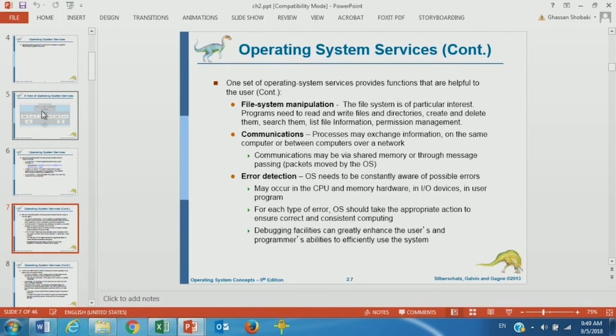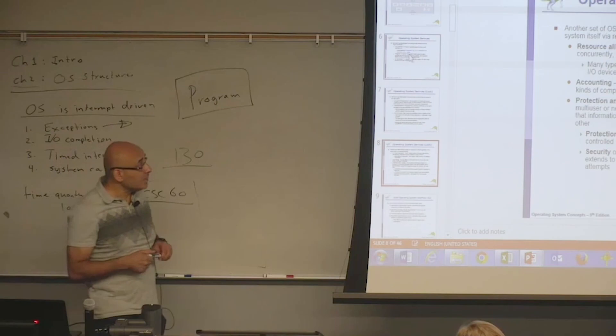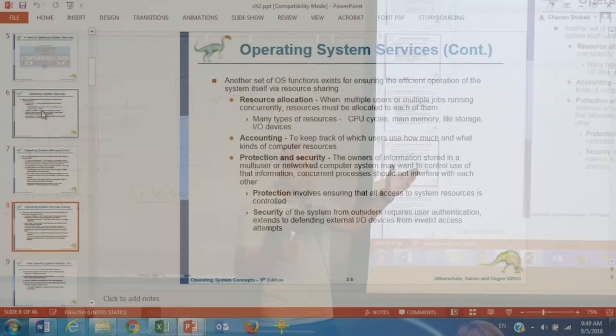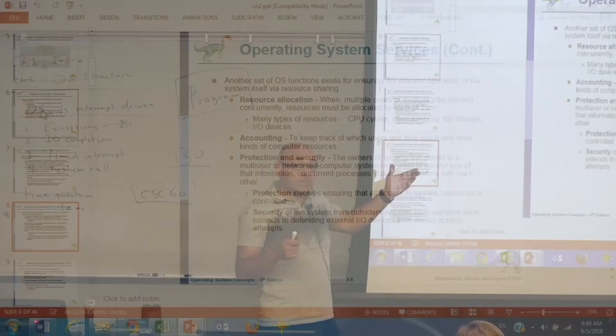Error detection, it's very important for the operating system to be aware of all the errors that may occur in the system, whether they are user errors or hardware errors or device errors. The operating system should be aware of these and should take the right action when an error occurs. Resource allocation, accounting, keeping track of how much of each resource a process has used, especially the CPU and we will see this in CPU scheduling.